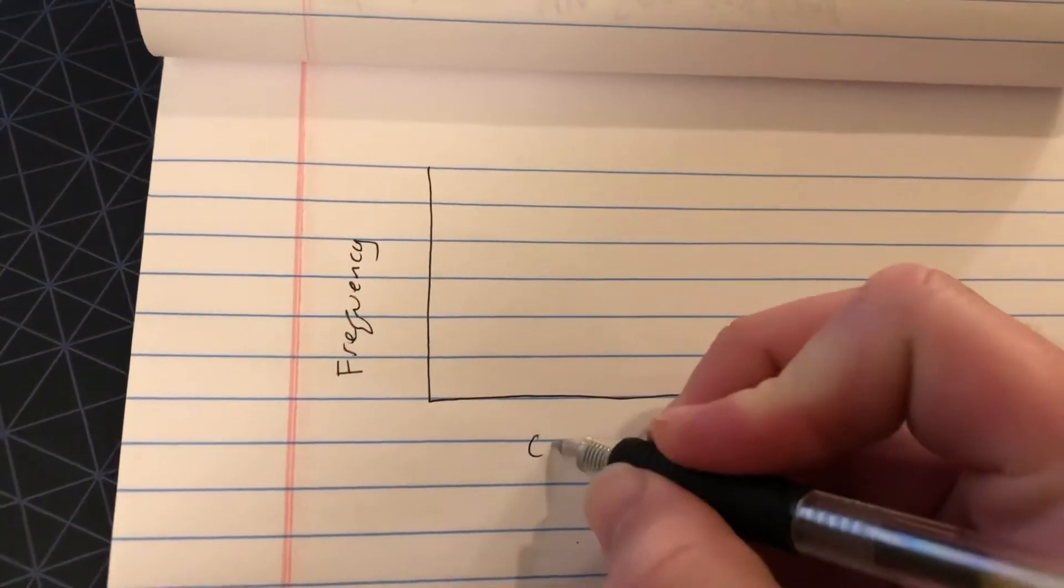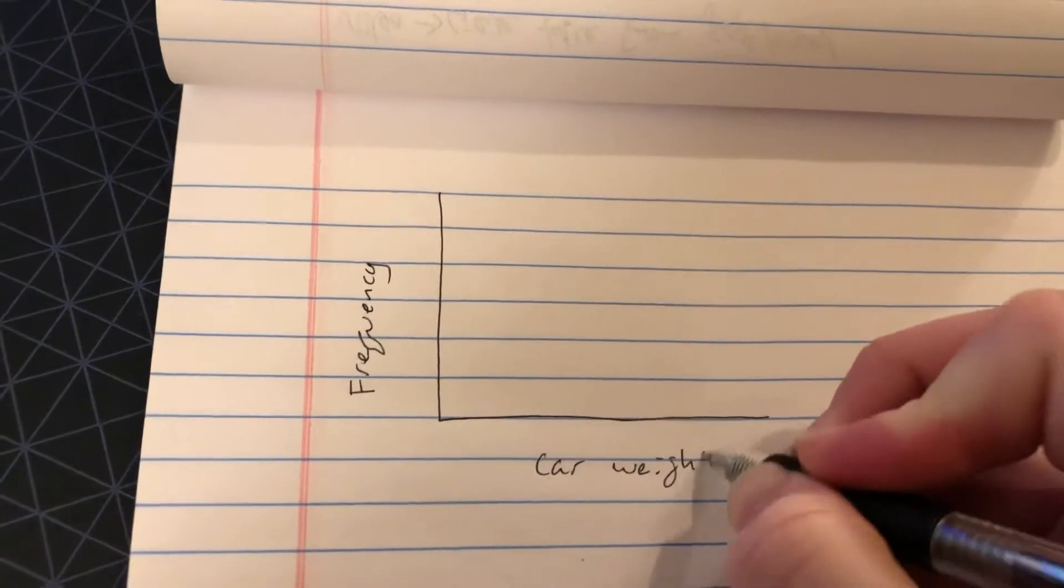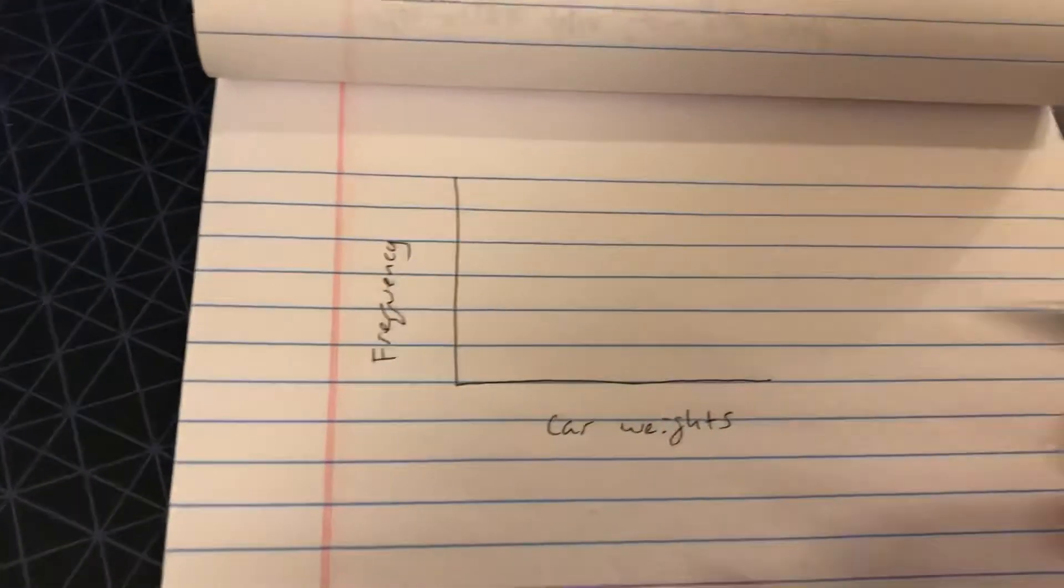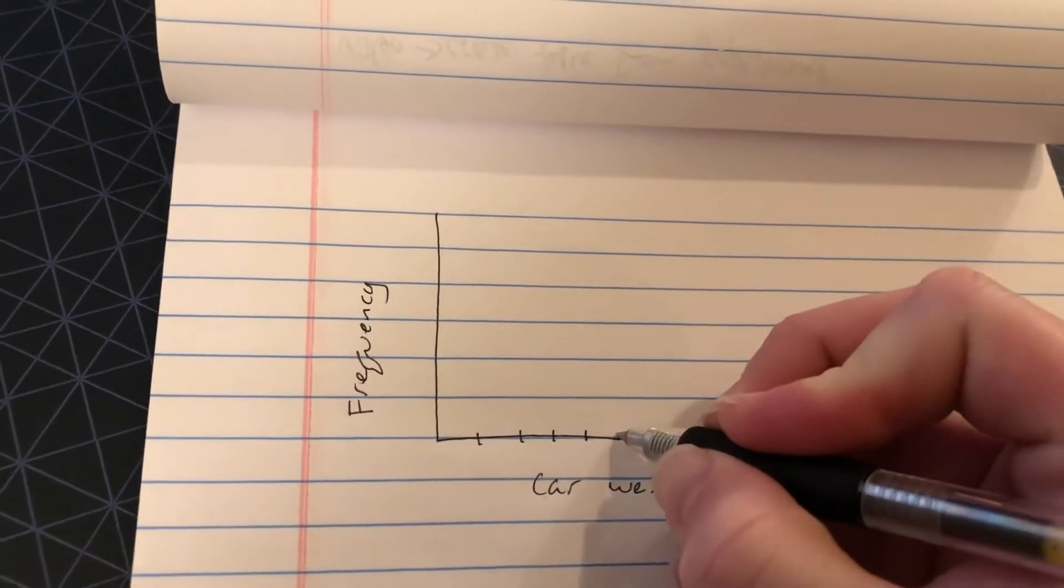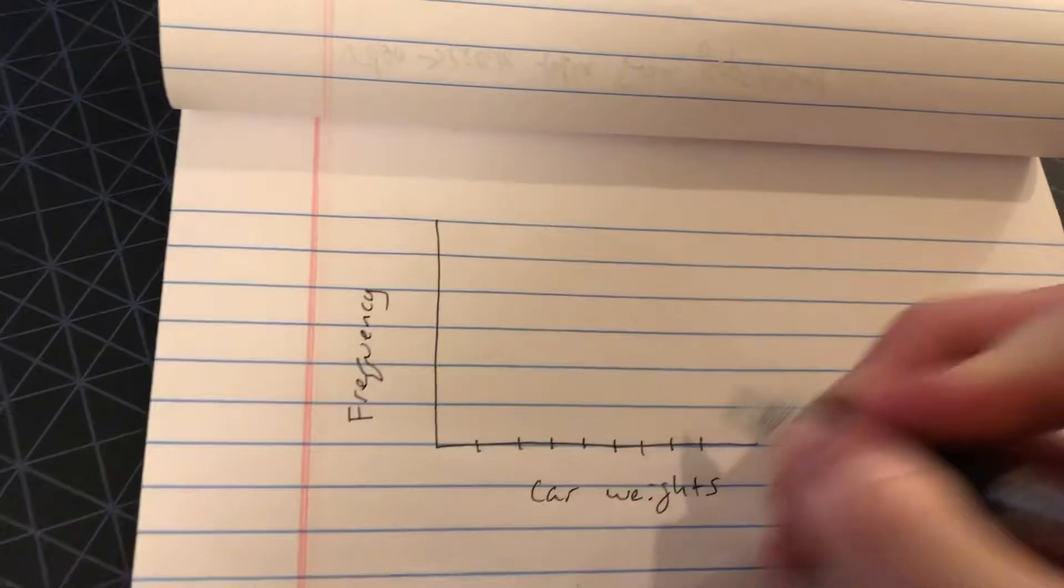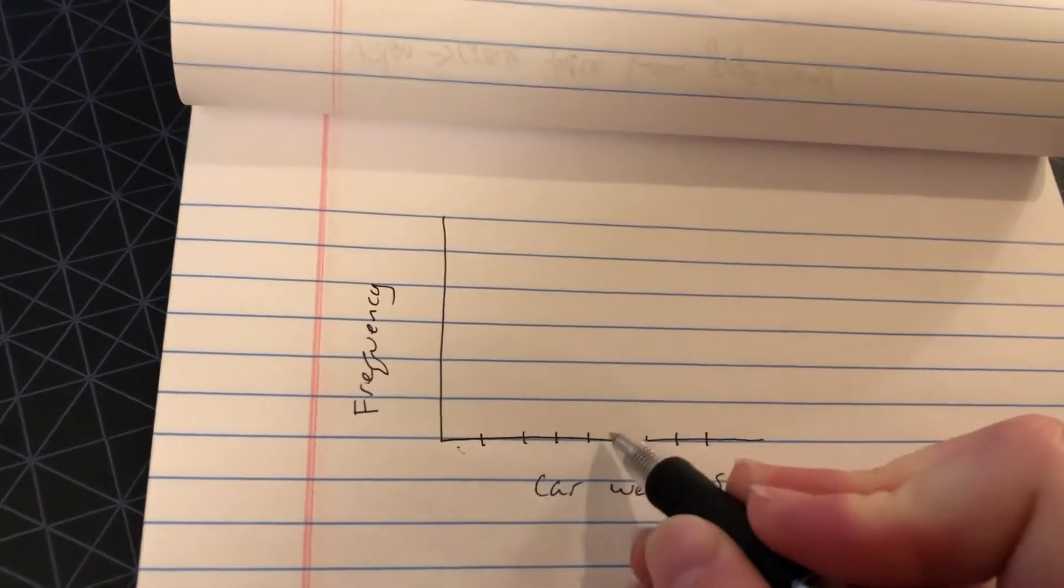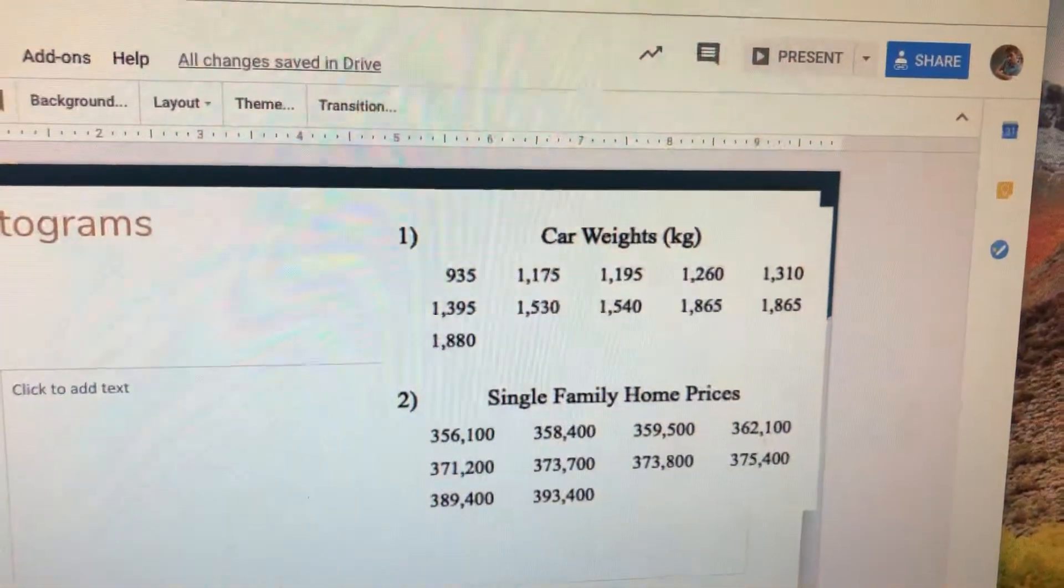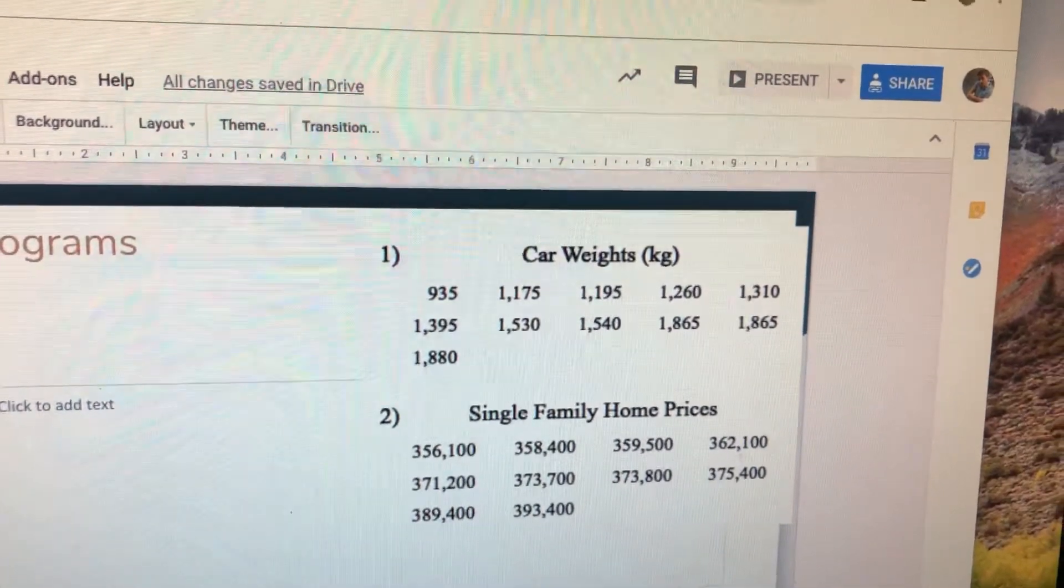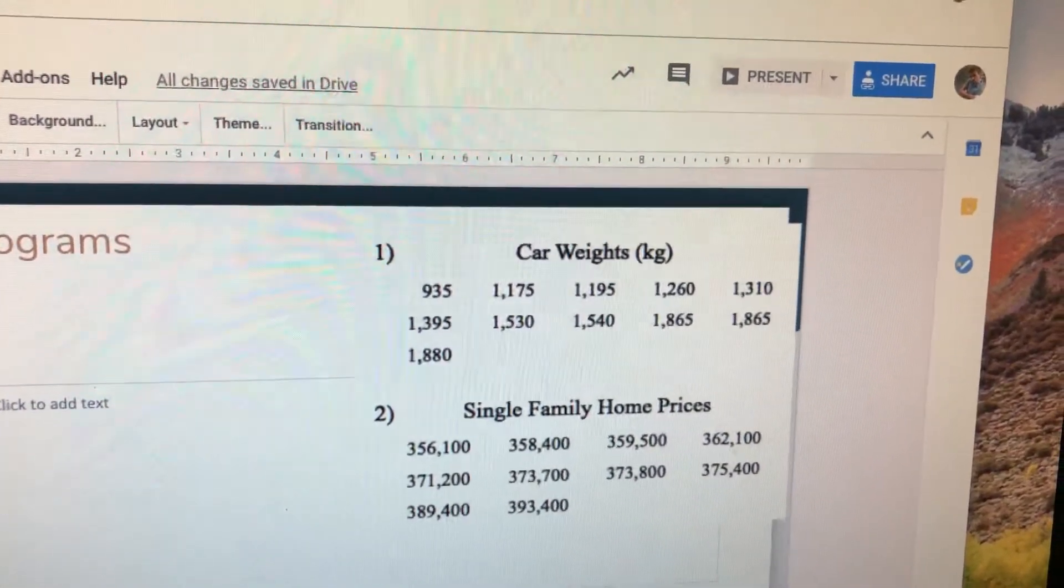And now down here, since we're going to start with number 1 with car weights, down here is going to be the car weight. Now when you create a histogram, you are going to have to decide how to create this x-axis going up. What intervals do we want to make? How big do we want each little bin down here to be? So if I look up here, all of the cars, they seem to be pretty close. They're all between 935 to 1880. So I'm going to make mine go up by 100s.